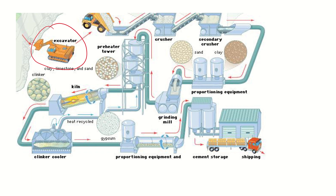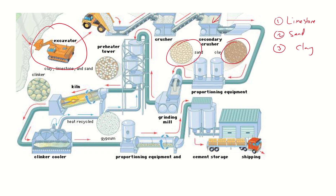The materials that are quarried are limestone, sand, and clay. If you look at the diagram, you see that sand, clay, and the limestone that was quarried have to be mixed in certain proportions, and once these are mixed and grinded, they move on to the kiln, and this is where the heating process takes place.